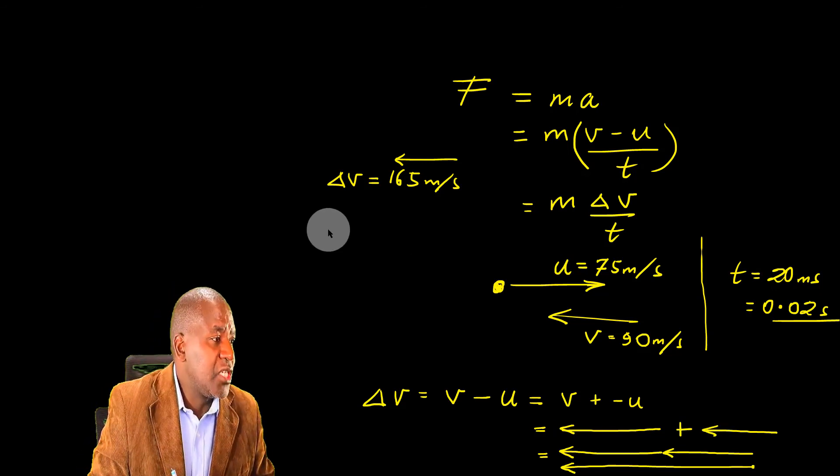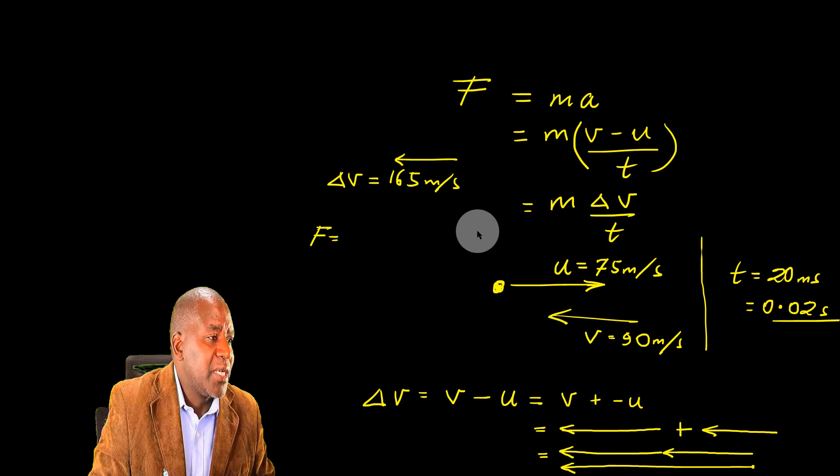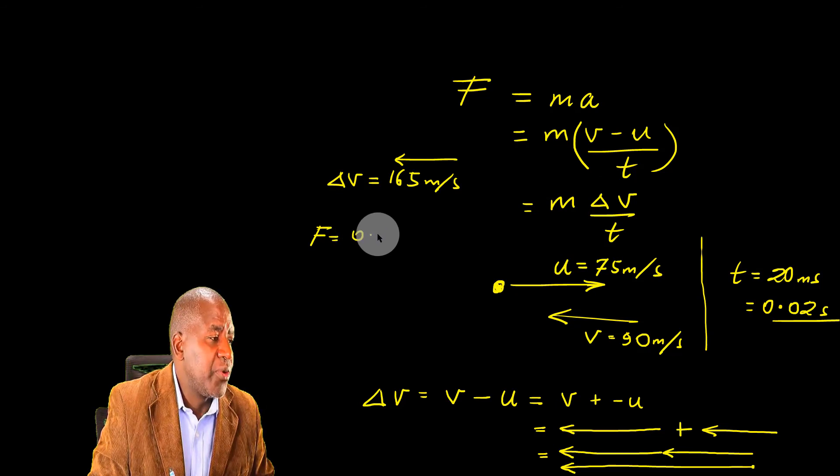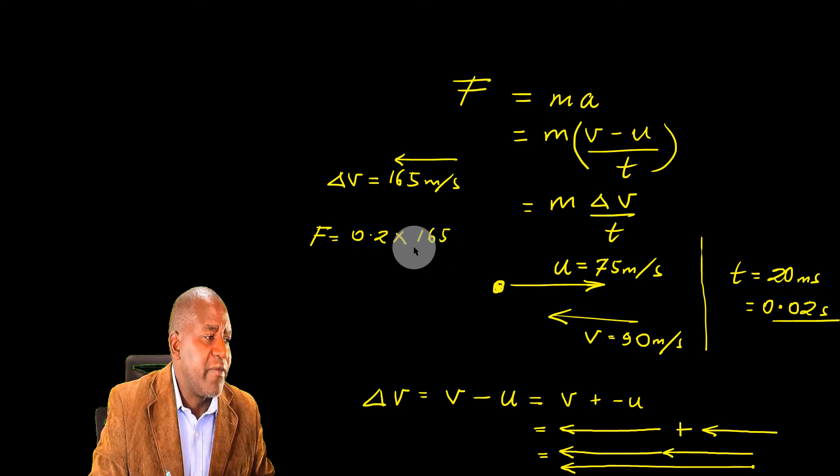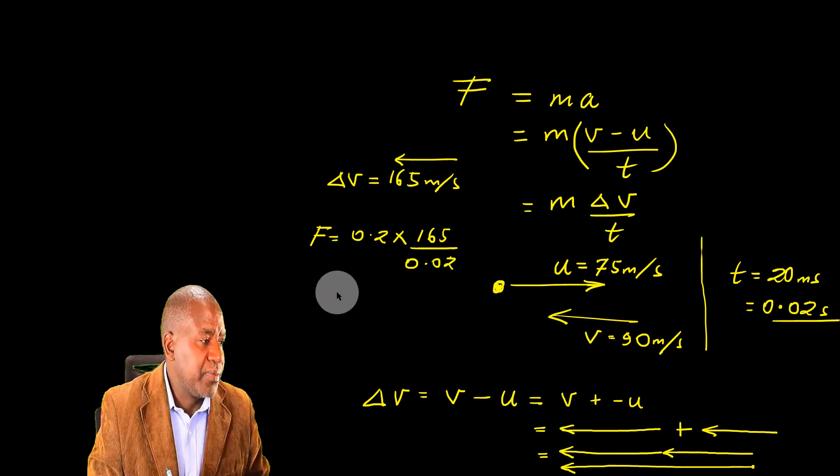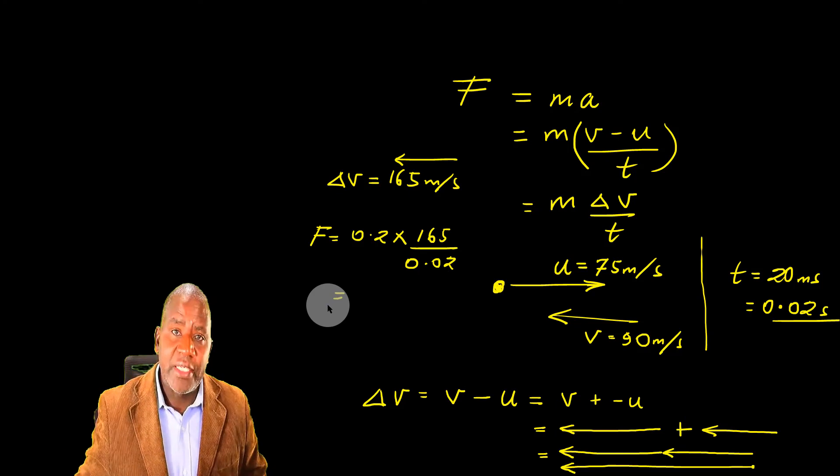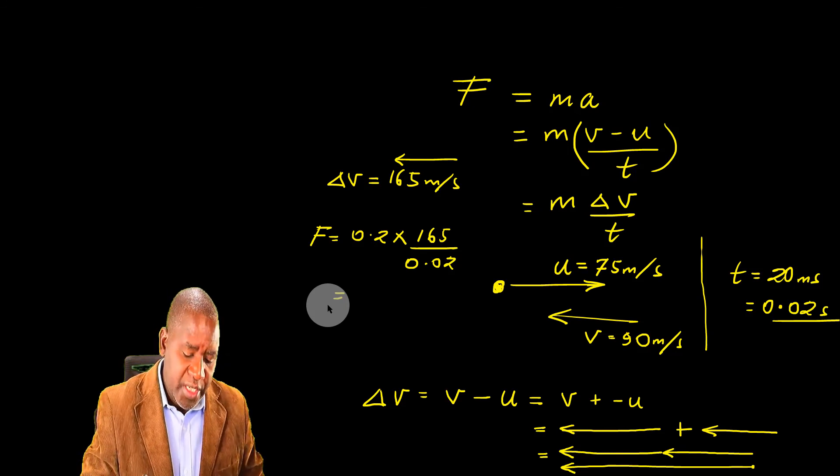At this point, it's just a matter of now saying F equals, this mass here is 200 grams, which is 0.2 kilograms. The change in velocity is 165. And that takes place in a time of 20 milliseconds. And now I can get the final answer. That will be 0.2 times 165 divided by 0.02 and I get 1650 Newtons.